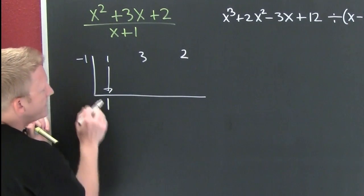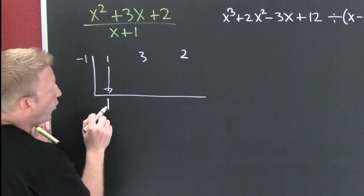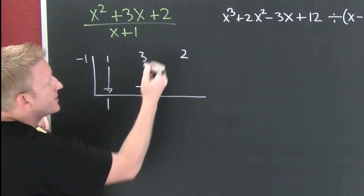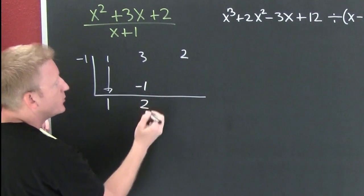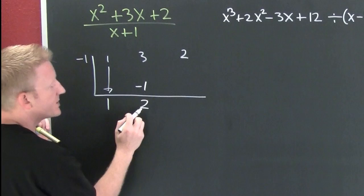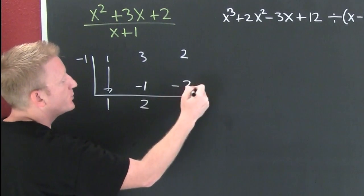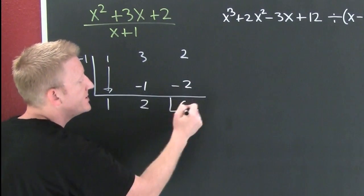Drop it like it's hot. Minus 1 times 1 gets me a minus 1. Very nice. 3 minus 1 is 2. Minus 1 times 2 is a minus 2.